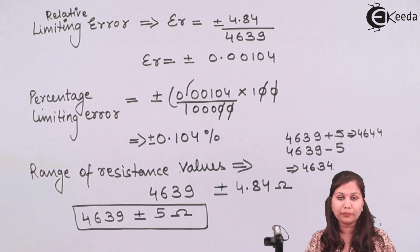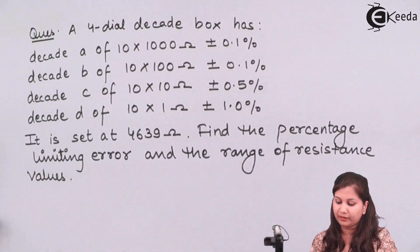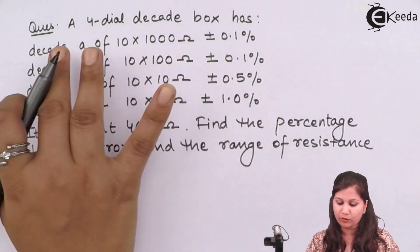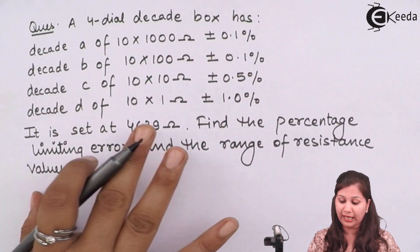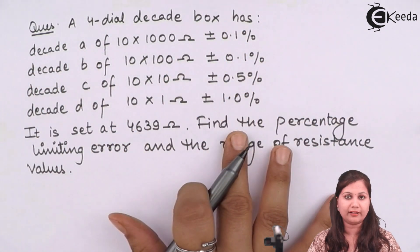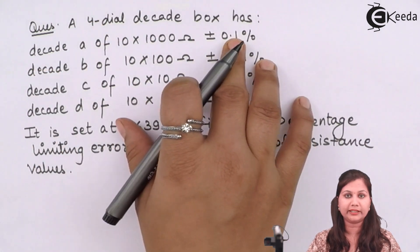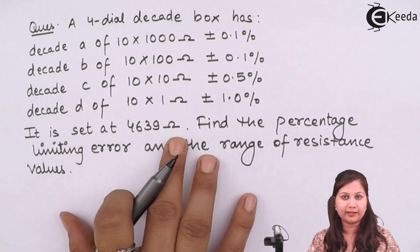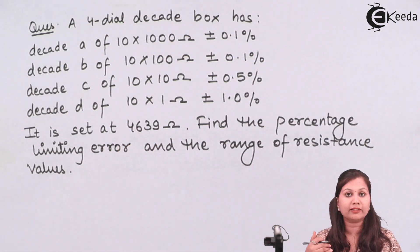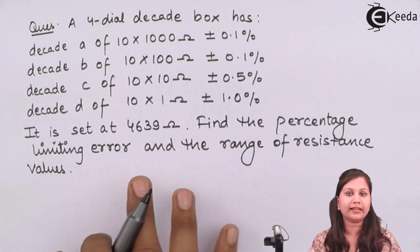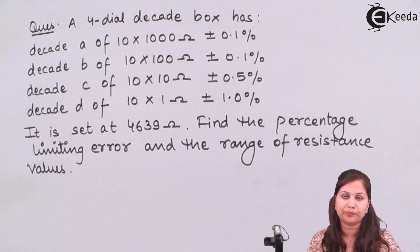In this video, we solved a problem finding the percentage limiting error and the range of resistance values for a 4-dial decade box where the percentage error in each decade was given. At the reading of 4639 ohms, we calculated the error for each decade, summed them to get total error, then derived the percentage limiting error and resistance range. I hope this problem is clear to you. Thank you.